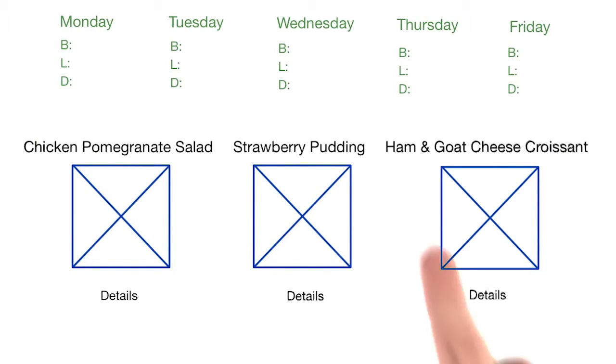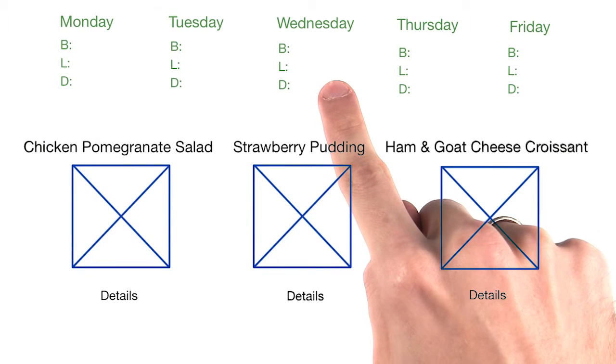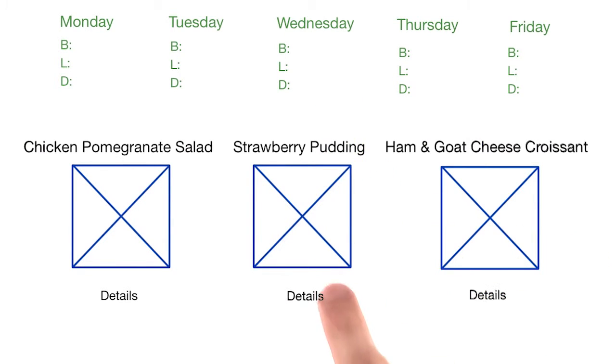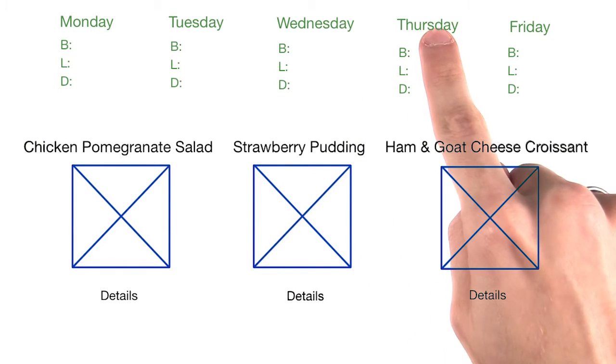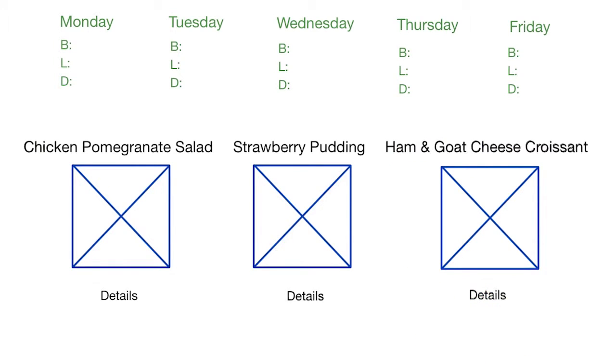We want to add an order tracker that will track what menu items have been picked for a specific day and meal. To keep the app modular, we'll create this new feature as a component.